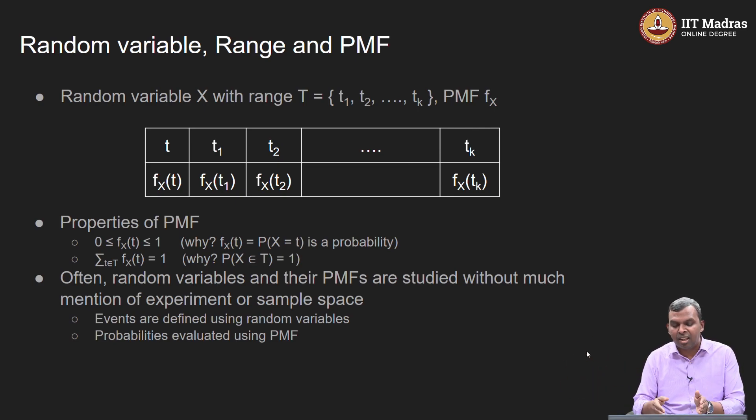This is ending at tk, you may not end at tk, you may keep going on and on. You can always think of a discrete random variable in terms of a table like this. The first row is the value that the random variable takes, second row is the probability with which that random variable takes that value. That is a PMF. Values PMF, range PMF, that fully captures what the random variable is.